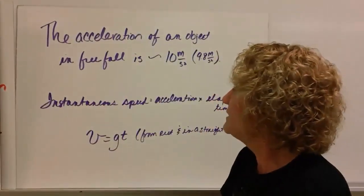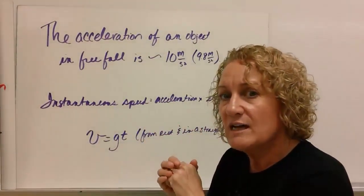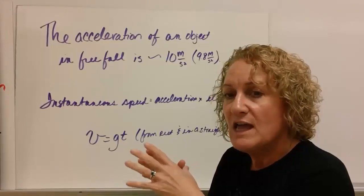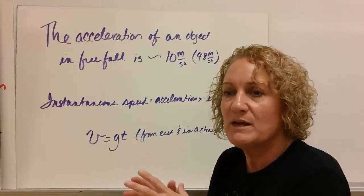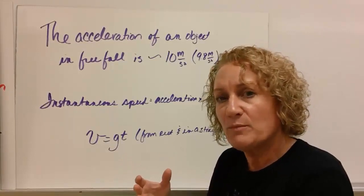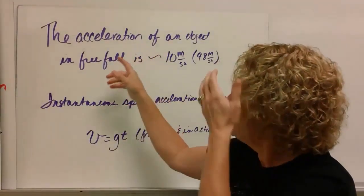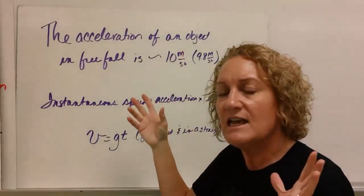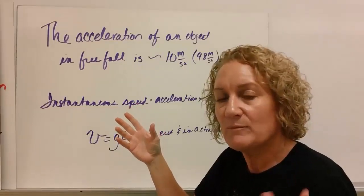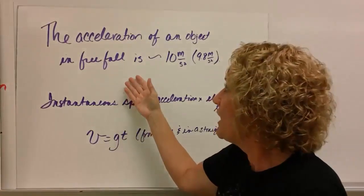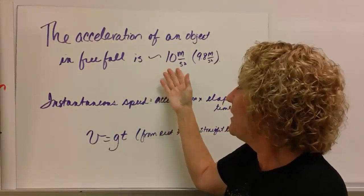The acceleration of an object in free fall is about 10 meters per second squared. If you need to be very accurate, use 9.8 meters per second squared. It is slightly different to different places in the Earth. That's why we pretty much just use 9.8 if we're being accurate or 10 if we're rounding. For our purposes, 10 is fine. And you know what's really interesting? It doesn't say how big the object is. It doesn't say how much it weighs. It doesn't matter. But what I want you to know is the acceleration of an object in free fall is about 10 meters per second squared.